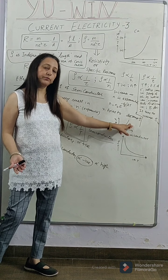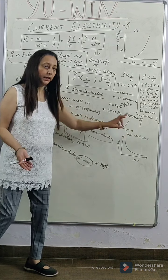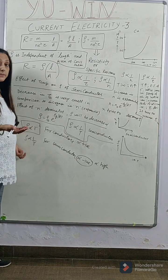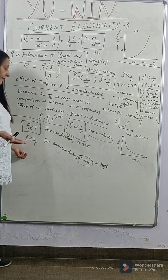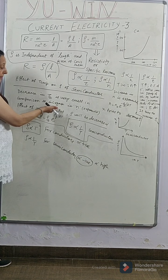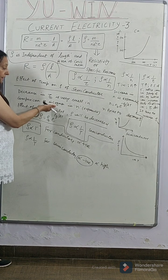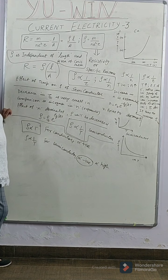If number of electrons increase, then obviously conductivity will increase. A conductor is a substance which has more number of free electrons. So much so that you will read in the chapter of semiconductor that their conductivity can increase even more than conductors.